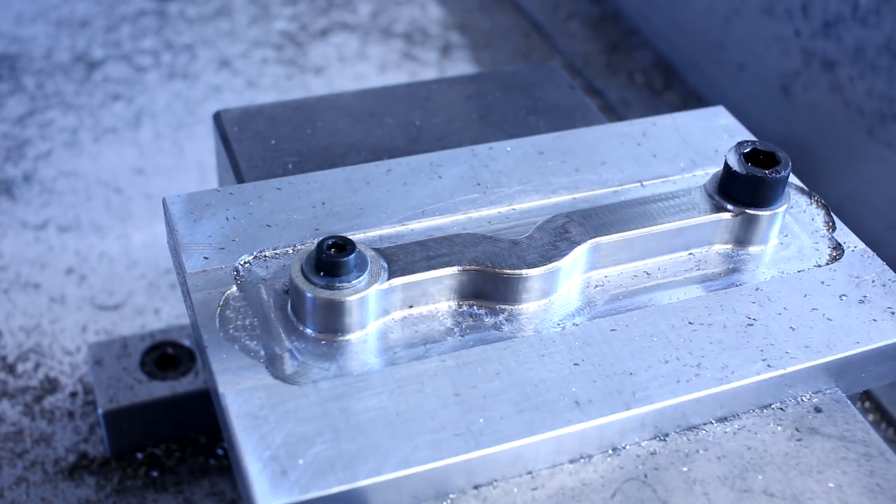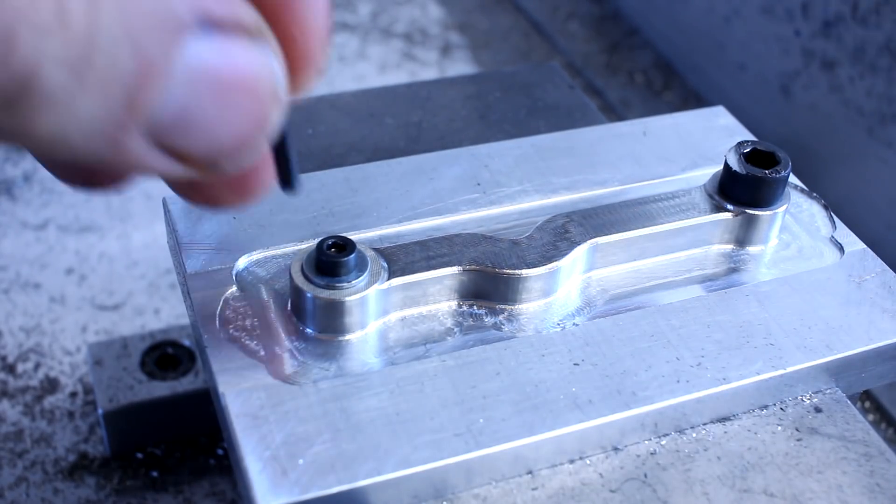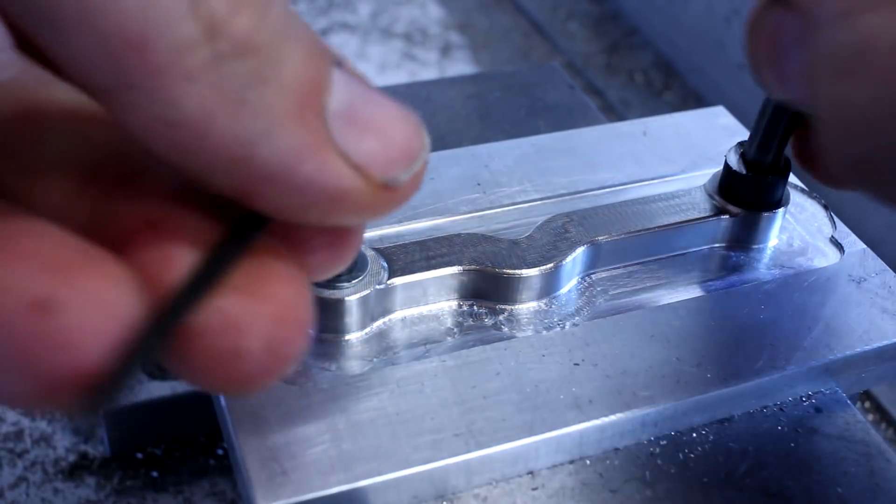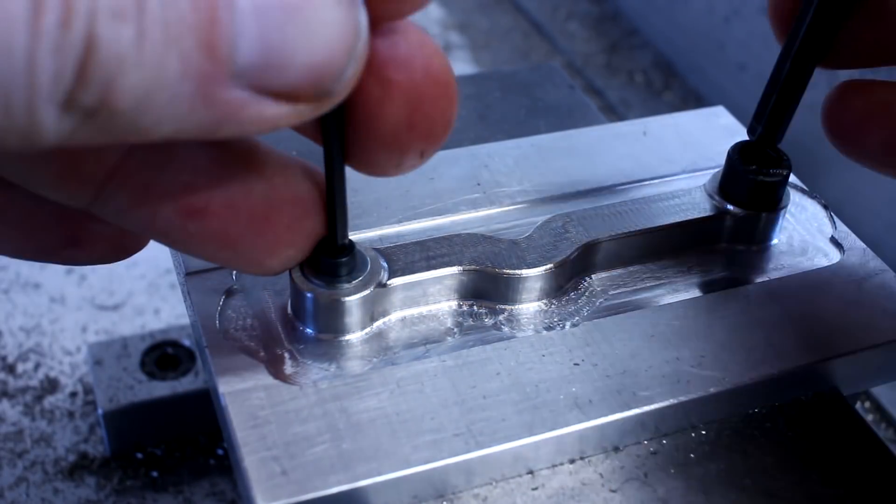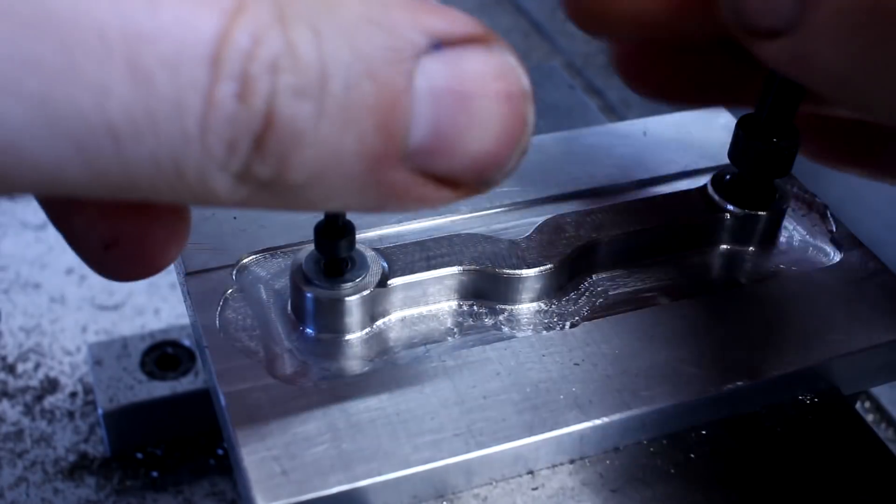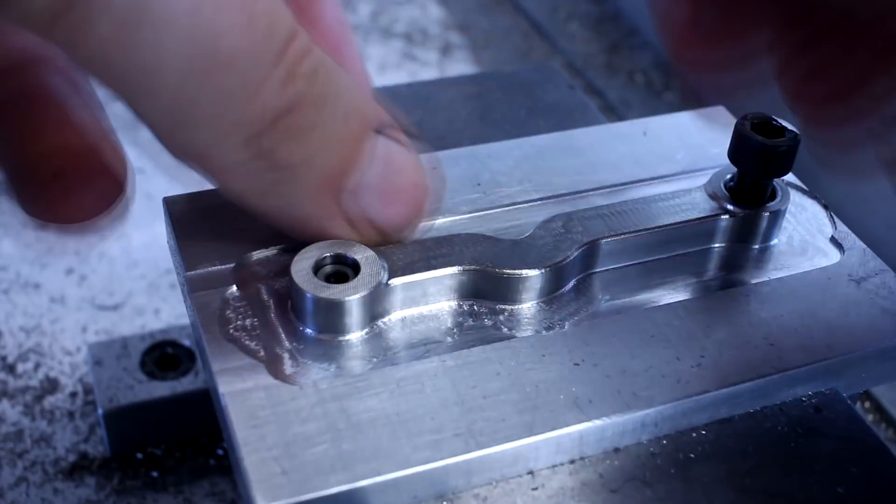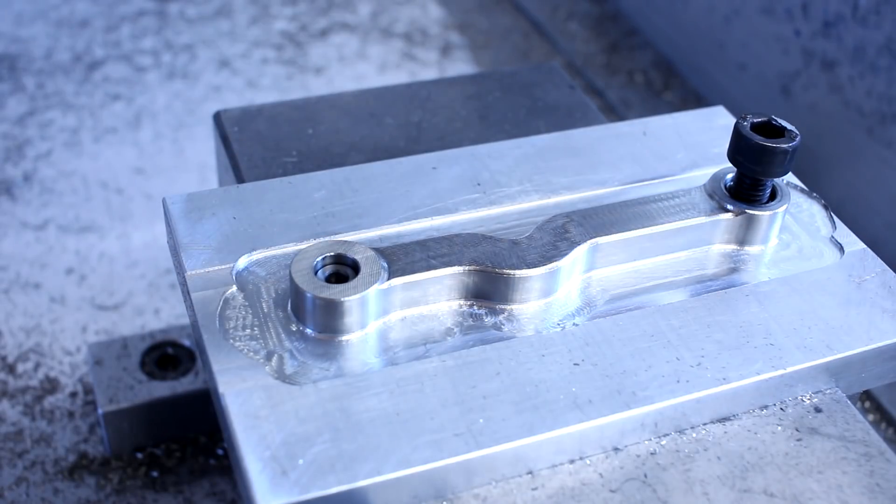And here you can see the part coming off the fixture after the first side is completely finished. Taking out the screws and the part comes off very nice and very easy.